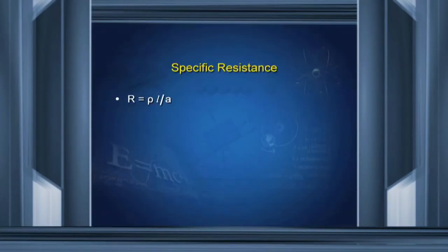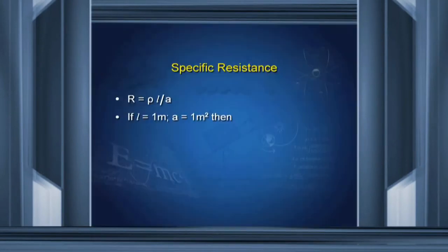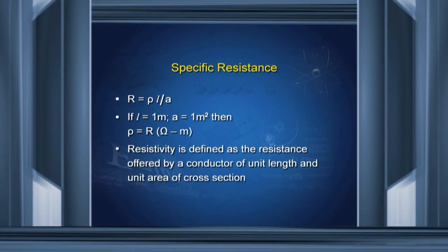Specific resistance: as we have seen, R = ρL/A. To define specific resistance, we take length L = 1 meter and area of cross-section A = 1 meter square, then we get ρ = R ohm·meter. So resistivity is defined as the resistance offered by a conductor of unit length and unit area of cross-section.